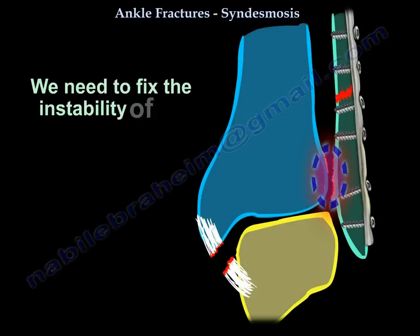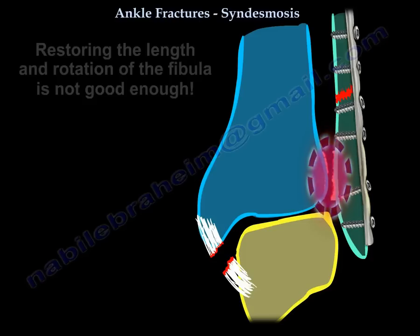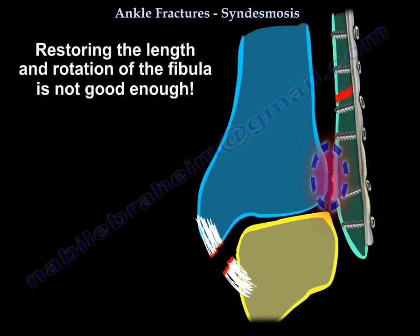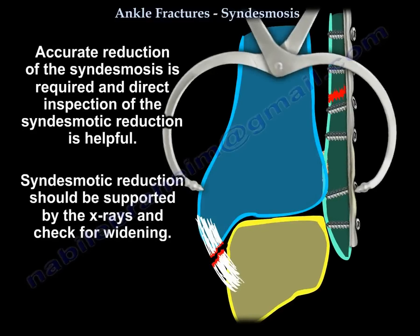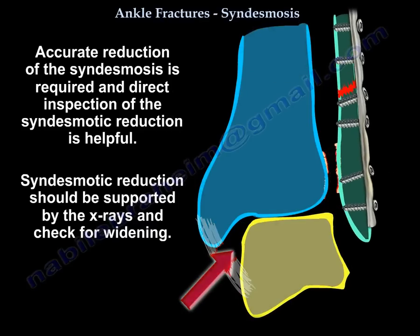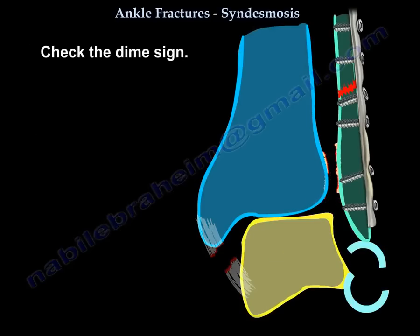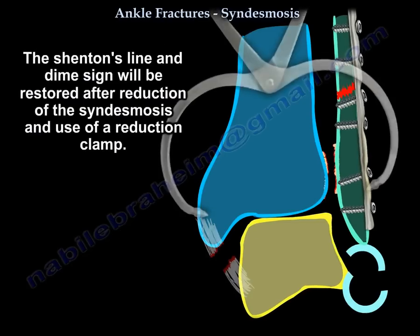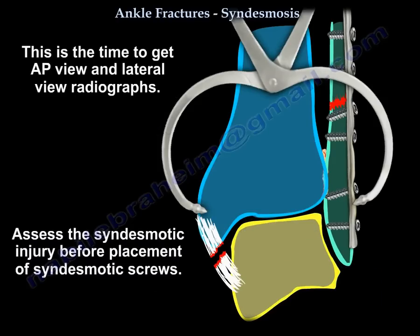Now we know there is instability of the syndesmosis and we're going to fix it. Before fixation, you must restore the length and rotation of the fibula. Accurate reduction of the syndesmosis is required, and direct inspection of syndesmotic reduction is helpful — this should be supported by x-rays. Check for widening, check for the shenton line, check for the dime sign. This will be done after you reduce the syndesmosis using a reduction clamp. Get an AP and lateral view and assess before you put your screws.